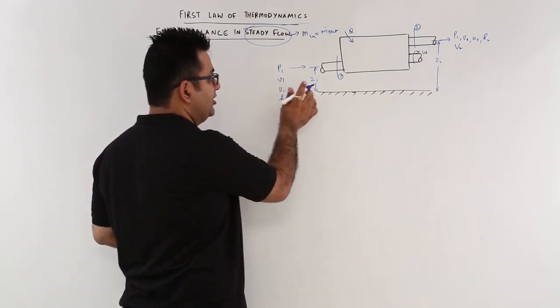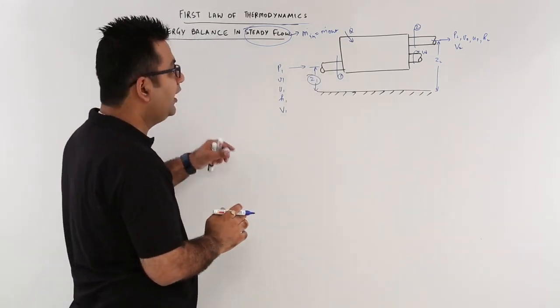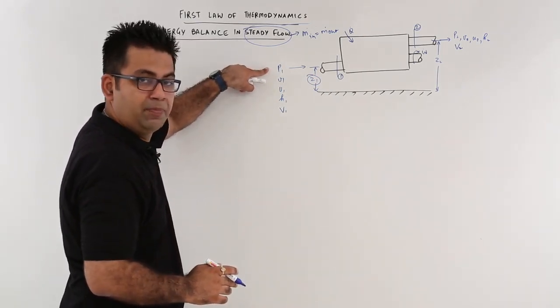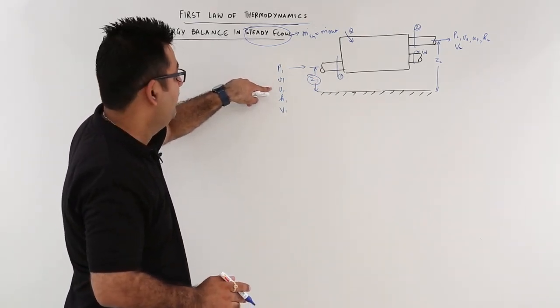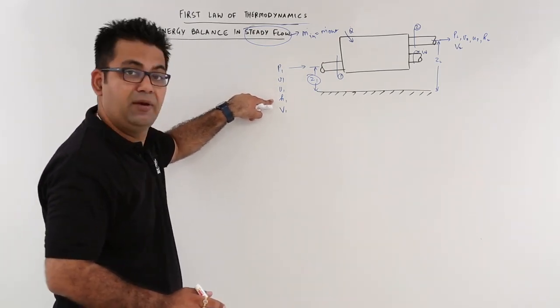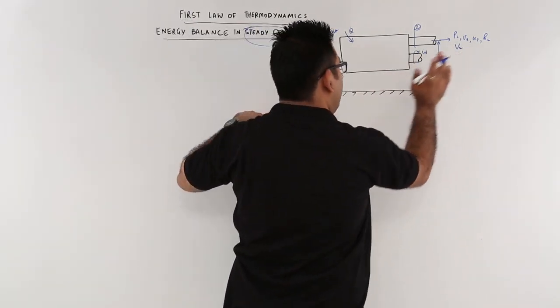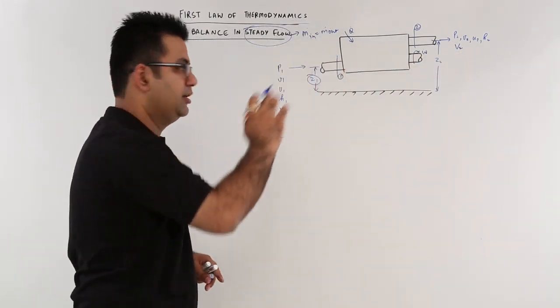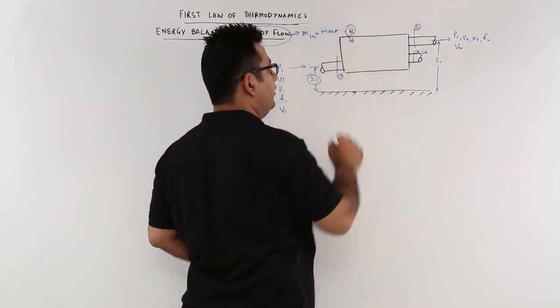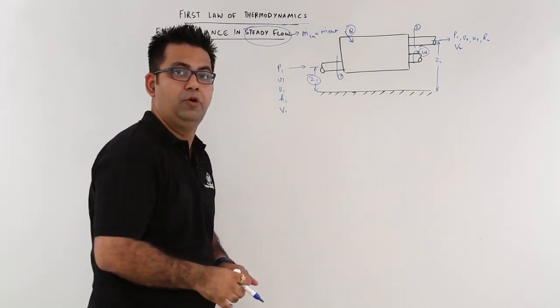At the entrance, you have the elevation from the reference plane as Z1. The fluid enters with pressure P1, specific volume V1, internal energy U1, specific enthalpy H1, and velocity V1. Similar values are at section 2, which is the exit. You have some rate of heat input Q dot and some rate of work output W dot.